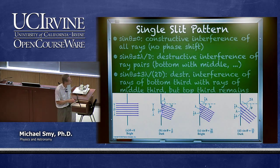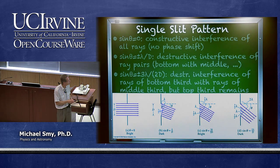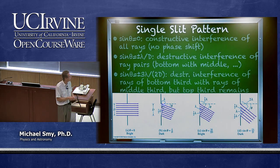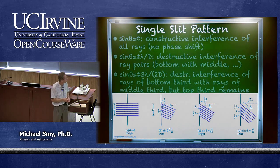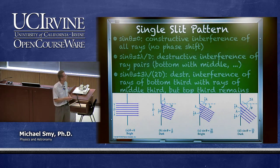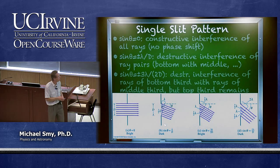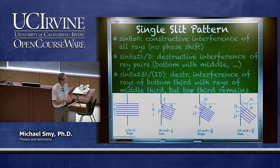The next ray up also destructively interferes with the one beside it because they have the same phase difference, and so on. Therefore, in the case where sine theta equals lambda over d, we get complete destructive interference — we actually get a dark spot.